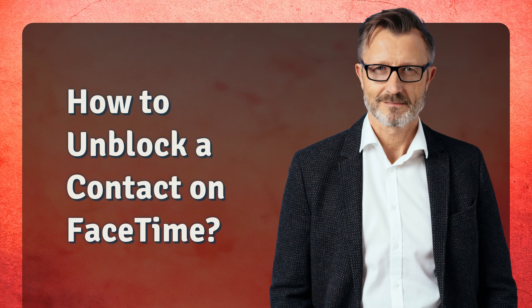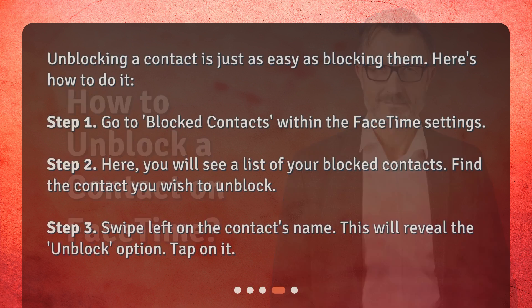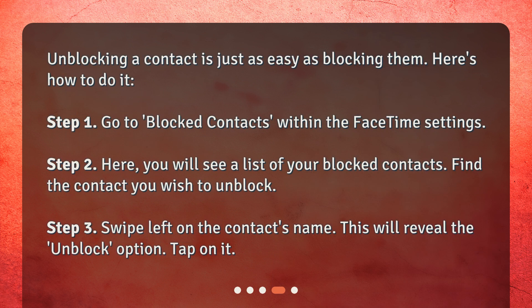Unblocking a contact is just as easy as blocking them. Here's how to do it. Step 1: Go to Blocked Contacts within the FaceTime settings. Step 2: Here, you will see a list of your blocked contacts. Find the contact you wish to unblock. Step 3: Swipe left on the contact's name. This will reveal the Unblock option. Tap on it.